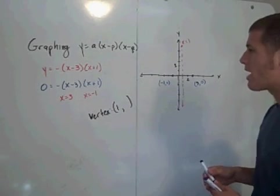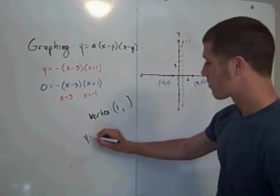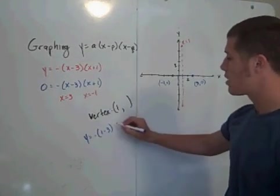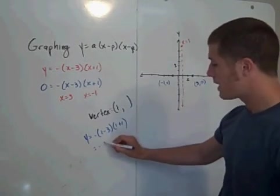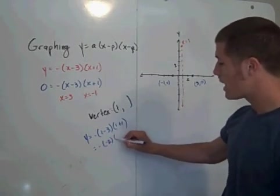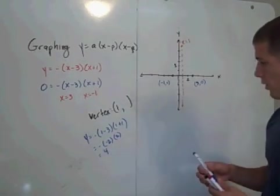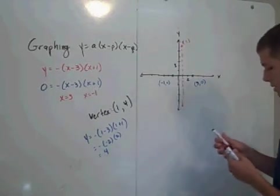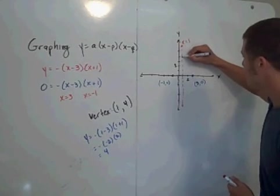So we want to find the y-value. You just plug 1 in. So the y-value is negative 1 minus 3 times 1 plus 1, which is negative 2 times 2, which is positive 4. So the vertex is the point 1, 4. So plot the point 1, 4. It's here.